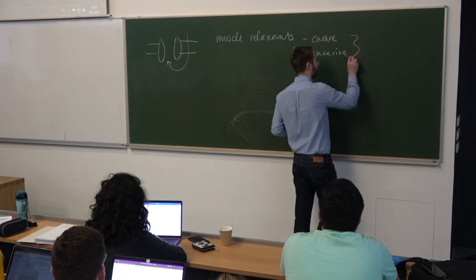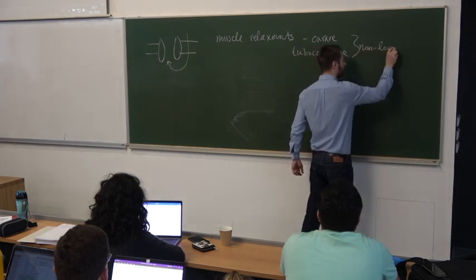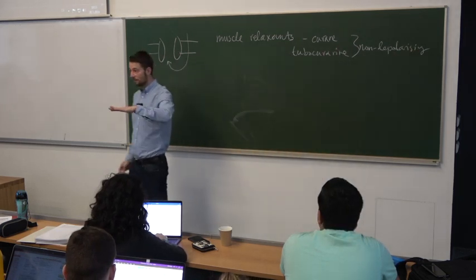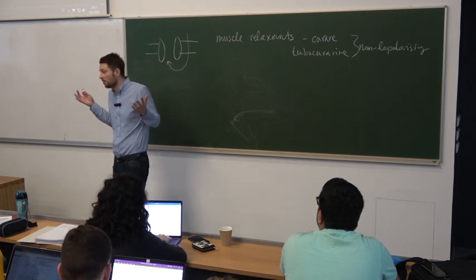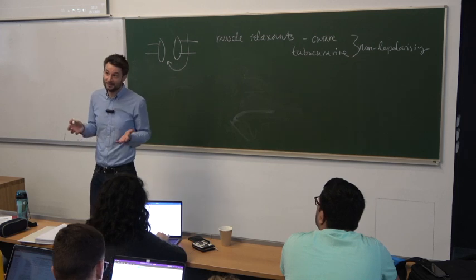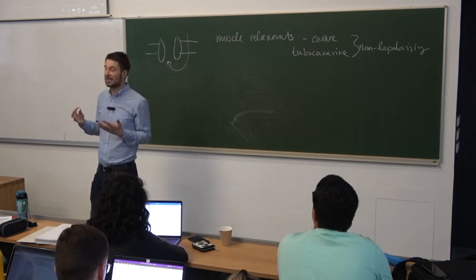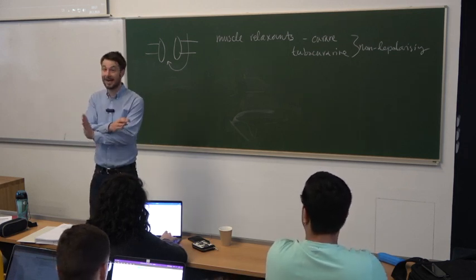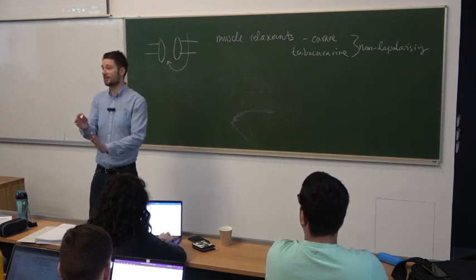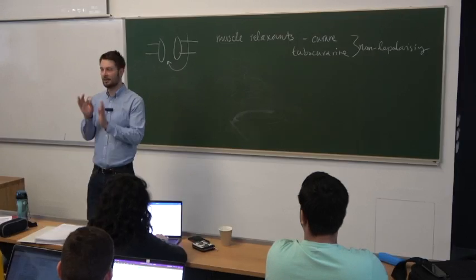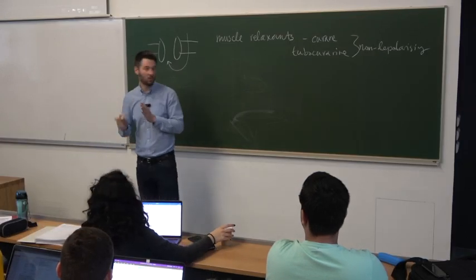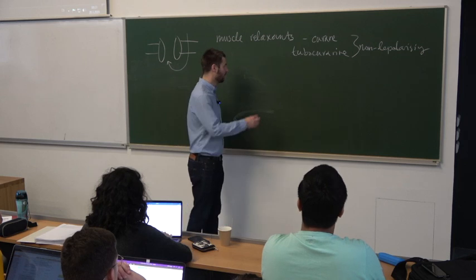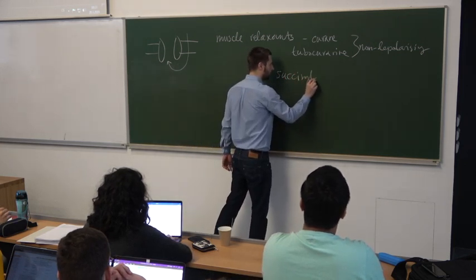All these curare derivatives — antagonists on nicotinic acetylcholine receptors — belong to the group of non-depolarizing muscle relaxants. This makes sense because if you use an antagonist on nicotinic acetylcholine receptors, there is no depolarization. However, we can also use molecules that do exactly the opposite: they activate nicotinic acetylcholine receptors, and yet give us the same effect — paralysis. These are called depolarizing muscle relaxants. One example is succinylcholine.